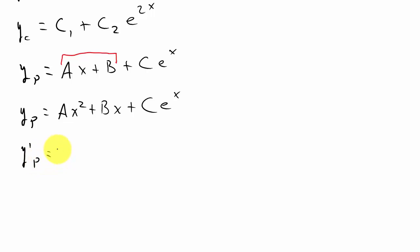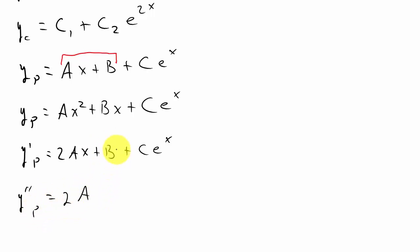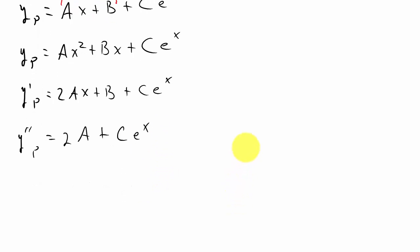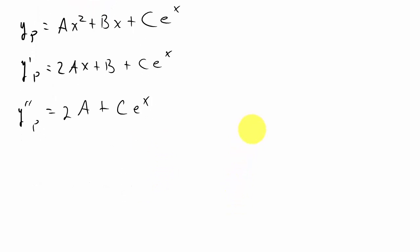Now let's take the derivatives. y prime of p equals 2Ax plus B plus Ce to the x. Then y double prime of p equals 2A plus Ce to the x, since the derivative of B is 0 and the derivative of Ce to the x is Ce to the x. We'll substitute y_p, y'_p, and y''_p into the original equation.